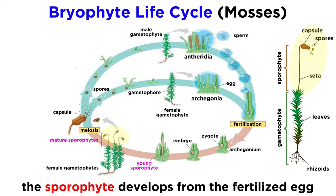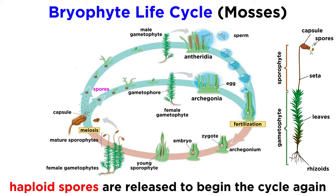In this particular case, the diploid generation actually never detaches from the thallus of its haploid parent. These little stalks at the tips of this moss are the sporophytes. The head of each sporophyte is called a capsule. Meiosis takes place within the sporophyte capsule, cutting the chromosome number in half, and then haploid spores are released from the capsule to start the cycle all over again.